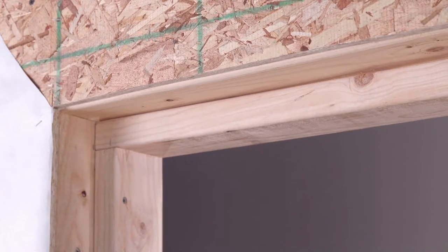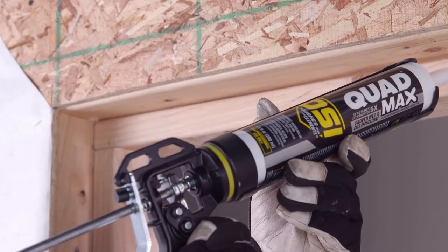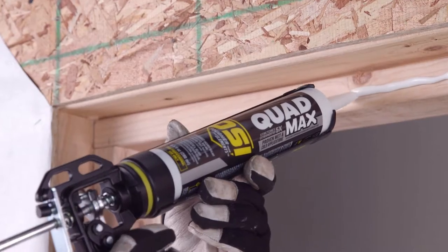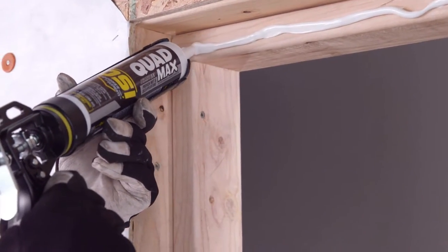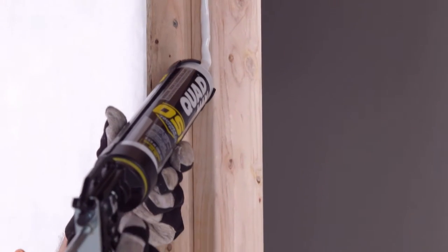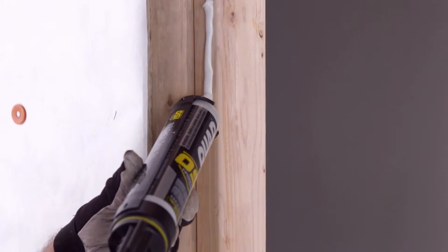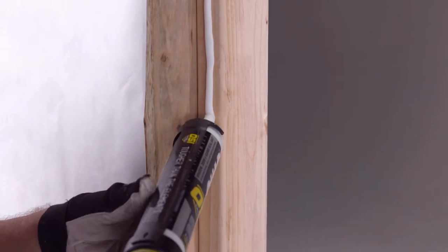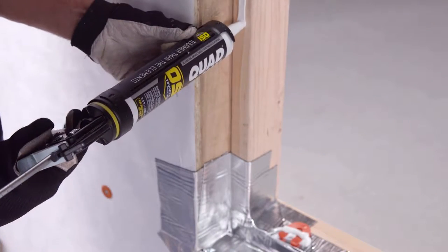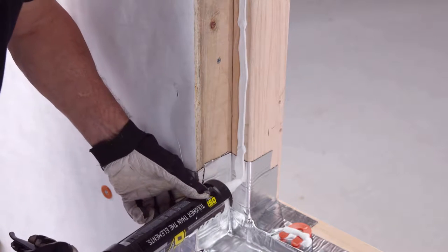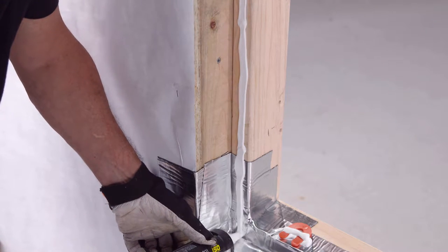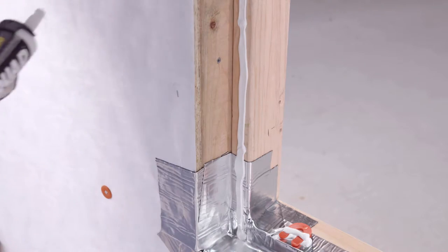The OSI Quad window and door system uses a specific method of applying sealant that provides a gasket to seal out water. To accomplish this, apply a continuous, three-eighths inch rounded bead of OSI Quad Max to the head and side buck edges to seal the window flange. Applying the sealant on the buck edge rather than the window flange is recommended for easier installation. Apply the bead so it will align with the pre-punched holes in the window's fin.